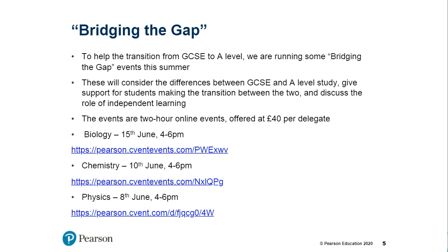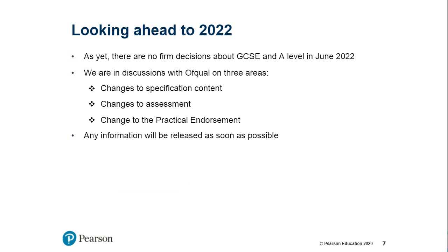My last slide is just to say that having sort of done the last couple of years with a blinkers approach — let's get through 2020, then 2021 — of course 2022 is imminently coming up on us. In another three or four months you'll be welcoming kids back to start the next academic year. We haven't lost sight of the fact that there will be a set of students starting A-level in September who have had a pretty patchy Year 10 and an extremely patchy Year 11, and those students are starting A-level probably not having covered all of the GCSE course.